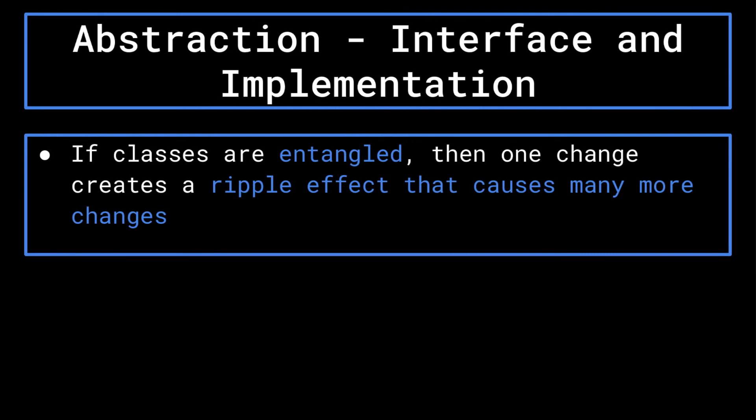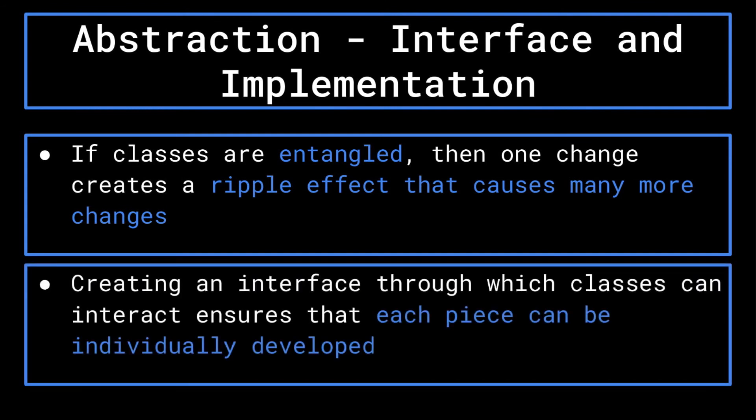Assuming the rest of the program was coupled together in this way, then many other classes would also have to be modified. Creating a set interface through which classes can interact with one another ensures that each individual piece can be changed without creating a ripple effect that causes the entire program to have to change in response.